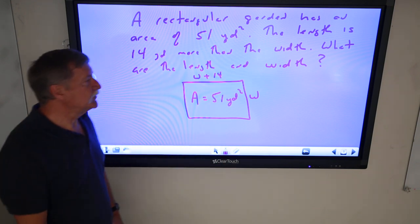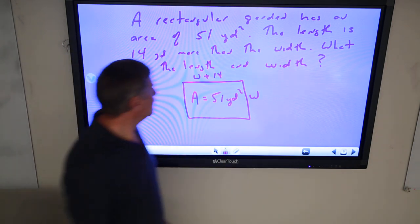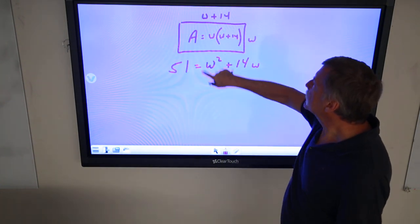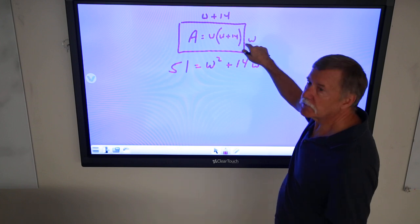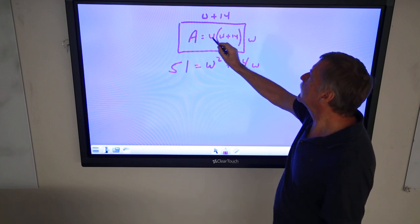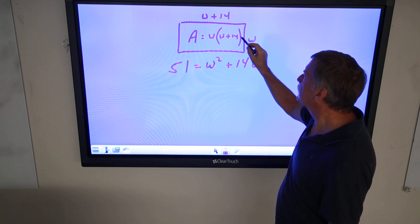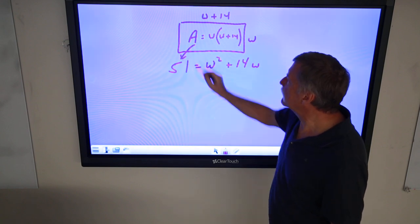Alright. You're with me so far. Now we've got this, alright. So the area is going to be length times width. In this case, the area is W times W plus 14. And they tell us the area is 51.